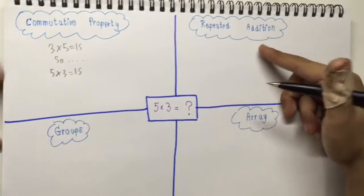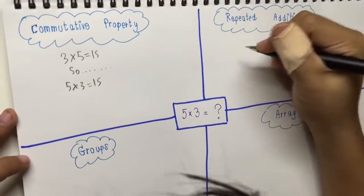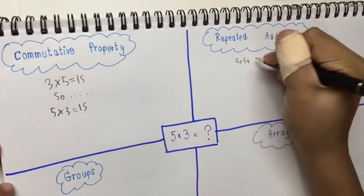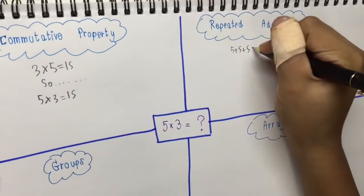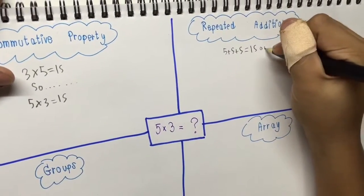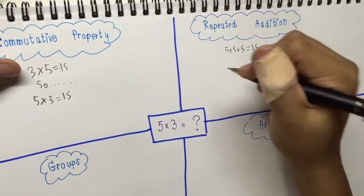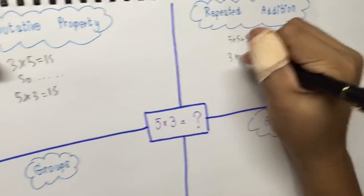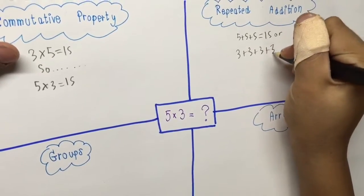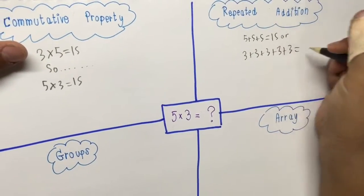So repeat addition: 5 plus 5 plus 5 equals 15, or 3 plus 3 plus 3 plus 3 plus 3 equals 15.